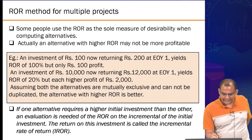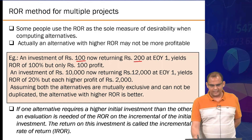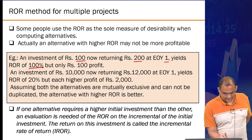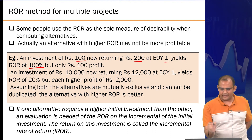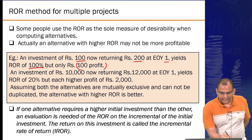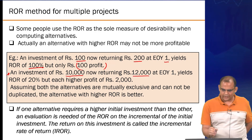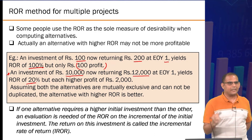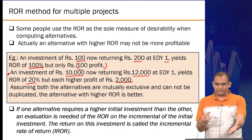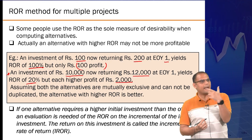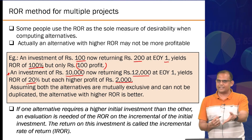Suppose an investment of 100 rupees returns 200 rupees at the end of year 1. The rate of return is 100 percent, but the absolute profit is only 100 rupees. Alternatively, you could invest 10,000 rupees and get 12,000 rupees — a rate of return of only 20 percent, but an absolute profit of 2,000 rupees. If you had the capacity to invest 10,000 rupees and could maximize your absolute profit, why not go for the second option even though the ROR of the first option is much higher?